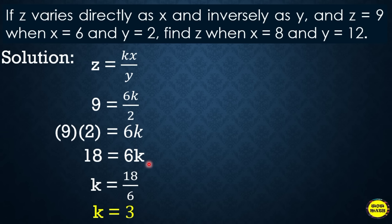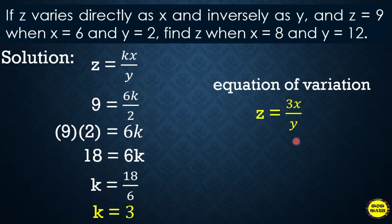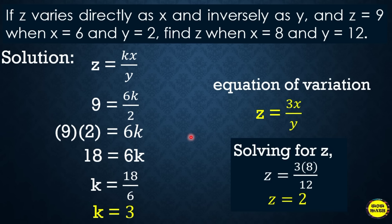The equation of variation is Z = 3X/Y, replacing K with 3. To find Z when X = 8 and Y = 12, substitute into the equation: Z = 3(8)/12 = 24/12 = 2. So Z = 2 when X = 8 and Y = 12.